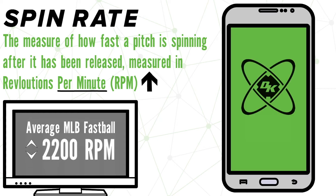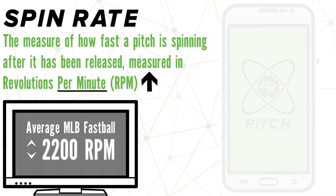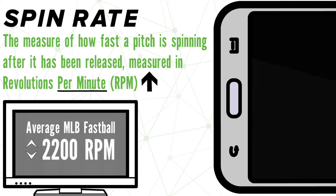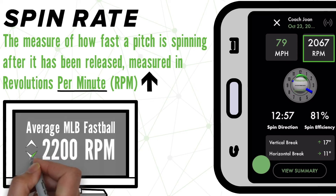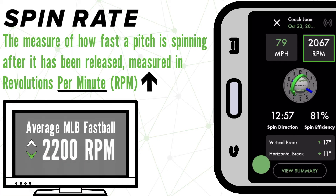So what does spin rate look like in the DK Pitch Tracker app? You'll find it right here. And when you take a look at this example, you will notice that this spin rate is slightly below the MLB league average on a fastball.